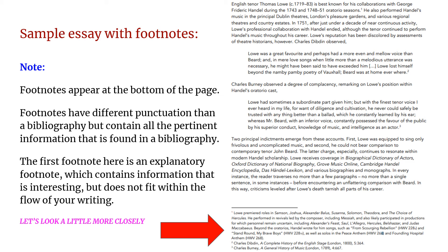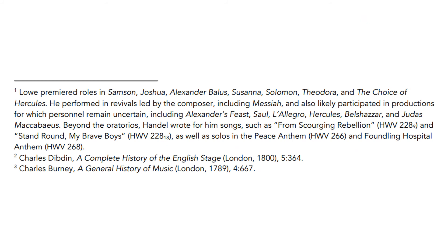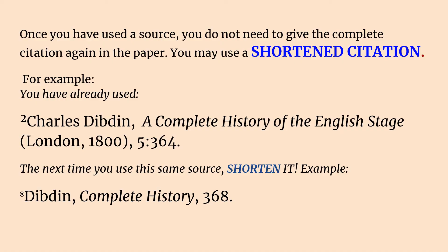If you notice this one, the very first footnote here is an explanatory footnote, which gives a bit more information. The next are plain footnotes that just tell the reader where exactly you are getting your information. Footnotes do look different from bibliographic entries. Notice right away that the author's first name comes first, not his last name first. This is the opposite of a bibliography. There are also different ways to punctuate as well. Please make sure to look at the BCB Writing Guide for Musicians to make sure that your punctuation follows our standards.